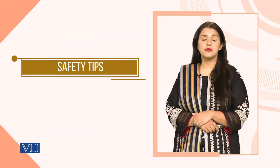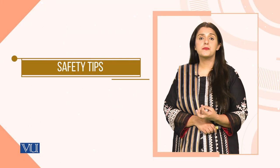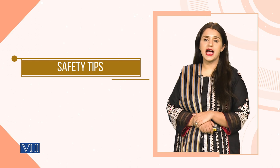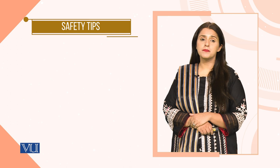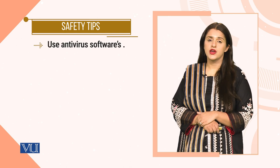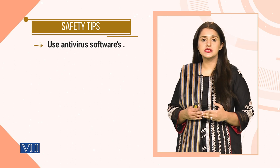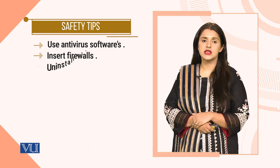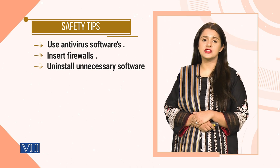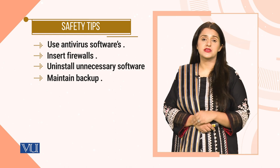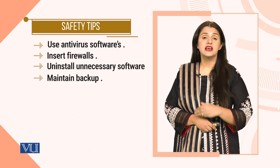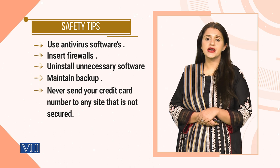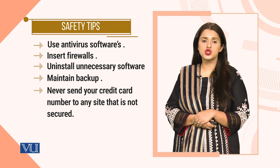While crime exists, it is important to look at safety measures or precautions which individuals can take to prevent themselves from cybercrimes. Firstly, on your computer systems, use antivirus software — this is the basic fundamental step which prevents your computer system from a lot of attacks from viruses, Trojan horses, and worms. Secondly, insert firewalls. Thirdly, uninstall any unnecessary software. Fourthly, always maintain backups, especially of important, crucial data. Further, never send your credit card number or passwords to any site which is not secure.